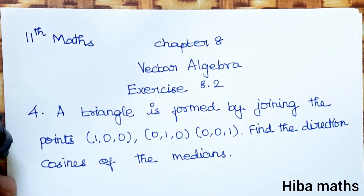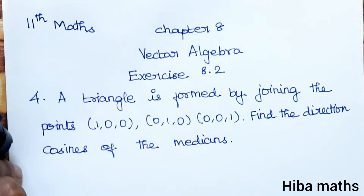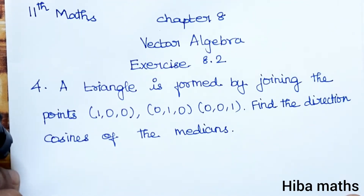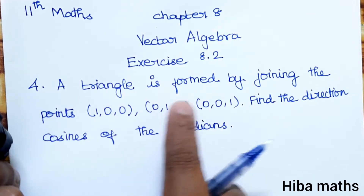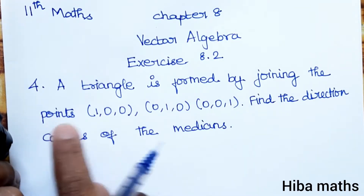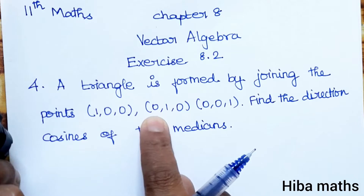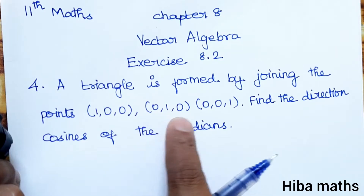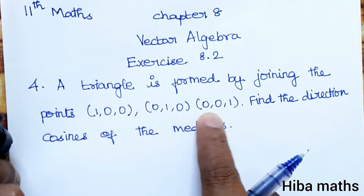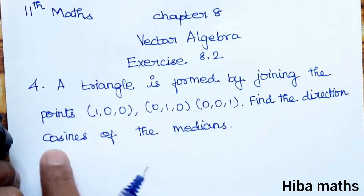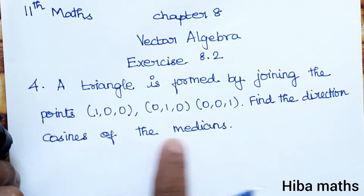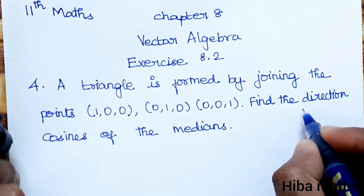Hello students, welcome to Hiba Max 11th standard Math chapter 8, vector algebra, exercise 8.2 fourth question. A triangle is formed by joining the points (1,0,0), (0,1,0), (0,0,1). Find the direction cosines of the median.